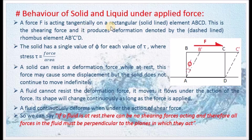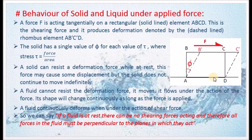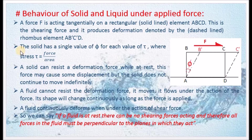Consider deformation and shape under a tangential force on a rectangular solid element. The solid is shown as a continuous line, with element corners labeled A, B, C, and D. When a force is applied, the element deforms to a new position A, B, C, D-dash. The solid has a single value of angle phi (deformation angle) for each value of tau (shear stress).